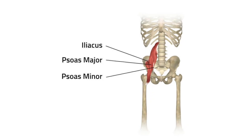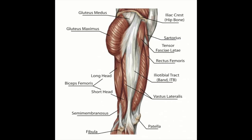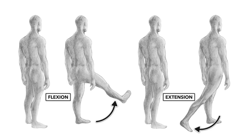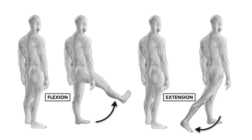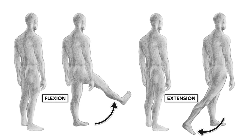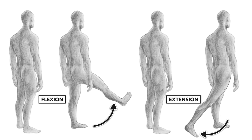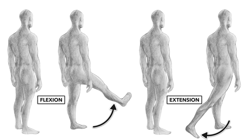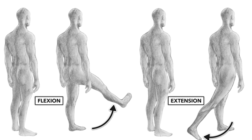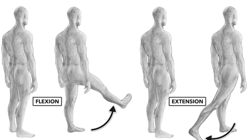All at the same time, the rectus femoris, iliopsoas, TFL, and the other glute muscles are antagonizing. This makes sense because the muscles in this group are mainly hip flexors, which is opposite. The hip flexors in this motion are eccentrically contracting in hip extension.